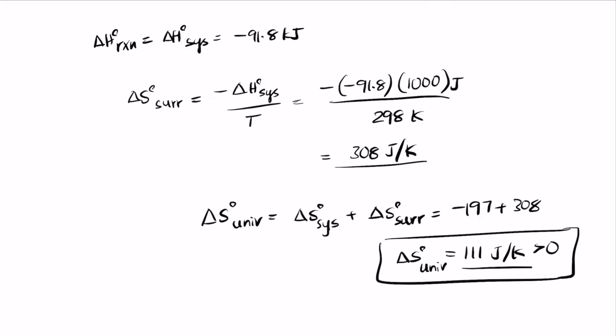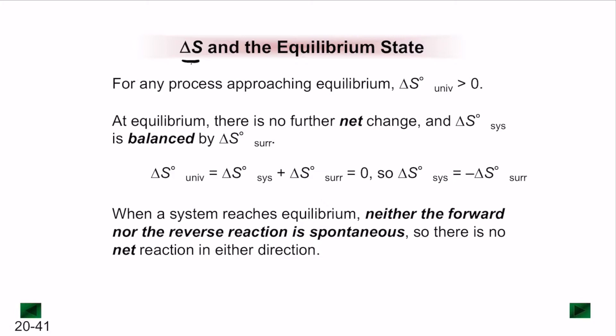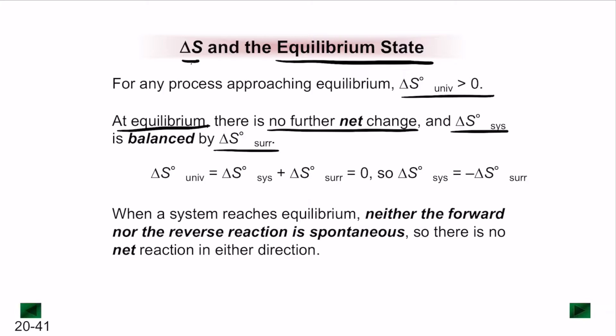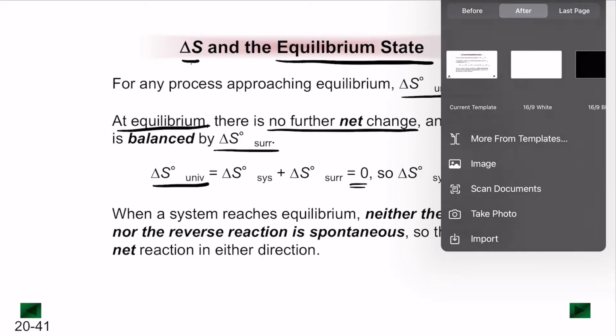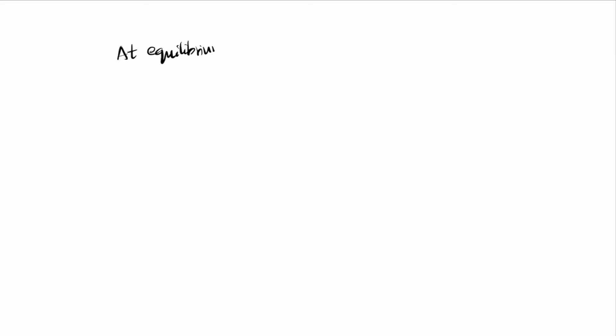Next, let's talk about delta S and the equilibrium state. For any process achieving equilibrium, delta S of the universe will always be greater than 0. At equilibrium, there is no further net change and delta S of the system is balanced by delta S of the surroundings, which means delta S of the universe becomes equal to 0. Any changes are balanced by one another.